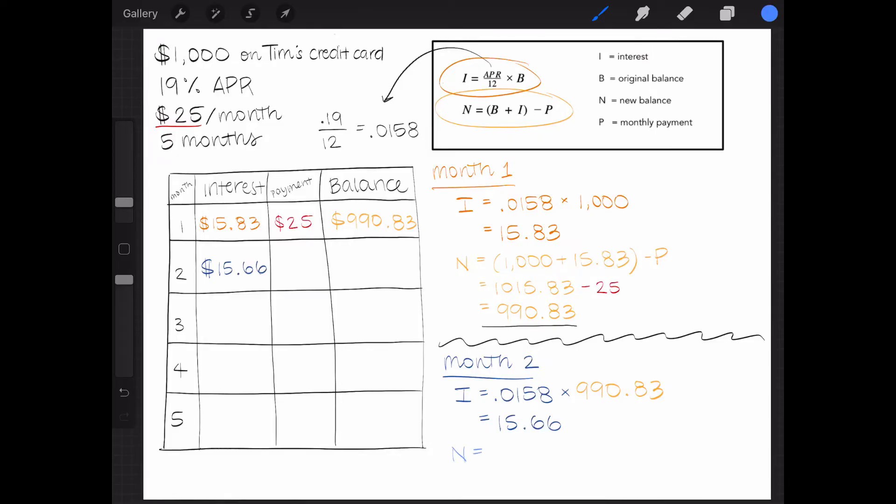Continuing the same process as earlier, I can add this interest to last month's balance, $990.83 plus $15.66. Then we can subtract the monthly payment of $25, which equals $981.49.